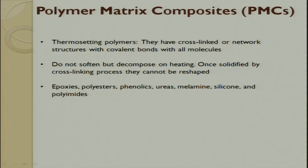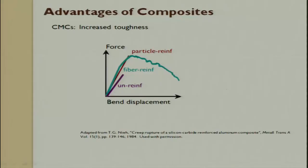Thermoset polymers have cross-linked or network structure with covalent bonds with all molecules. They do not soften but directly decompose with heat. Once solidified through the cross-link process, they cannot be reshaped. Examples are polyester, epoxy, phenolic, ureas, and silicone. In composite comparison, unreinforced polymer, fiber reinforced composite, and particulate reinforced composite show different force versus bend displacement behavior — in particulate reinforced composites, there is a gradual fall of force.